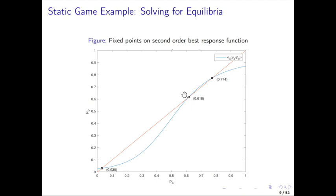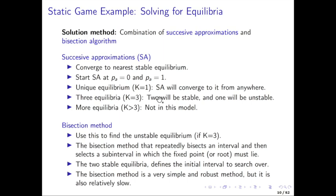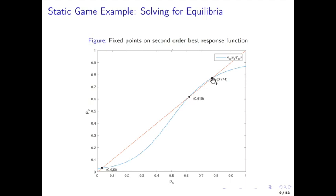One of the solutions that's really hard to find using successive approximations — in fact, cannot be found by successive approximations unless you start exactly at the solution — is the mixed strategy equilibrium in the middle, which is an unstable equilibrium. Irrespective of how close you start to this equilibrium, you're going to converge to one of the other two, because the process of successive approximation goes in that direction. So it cannot really be used to solve for all the equilibria.